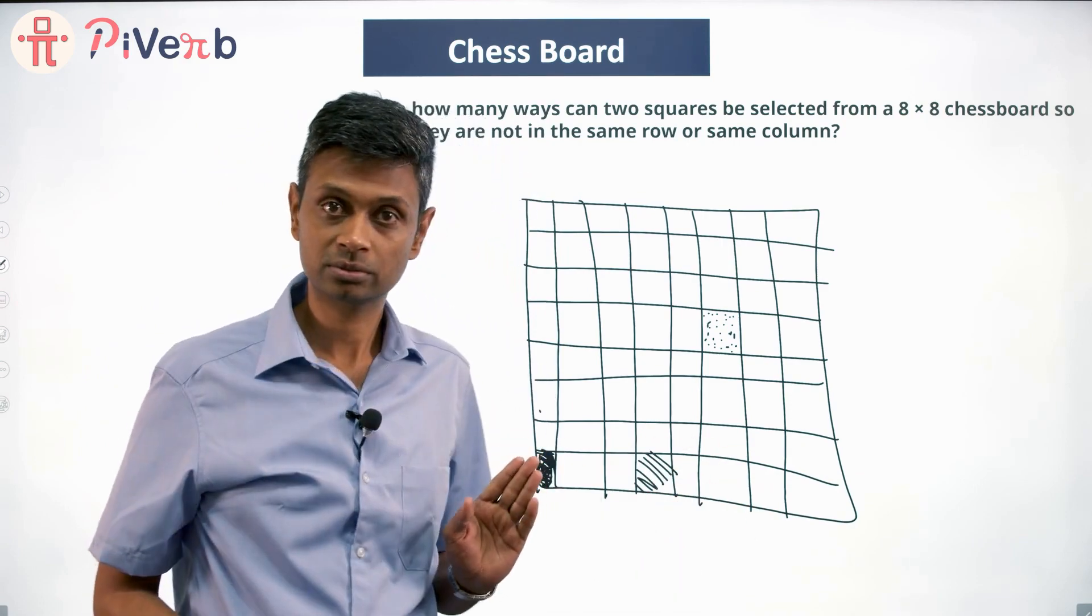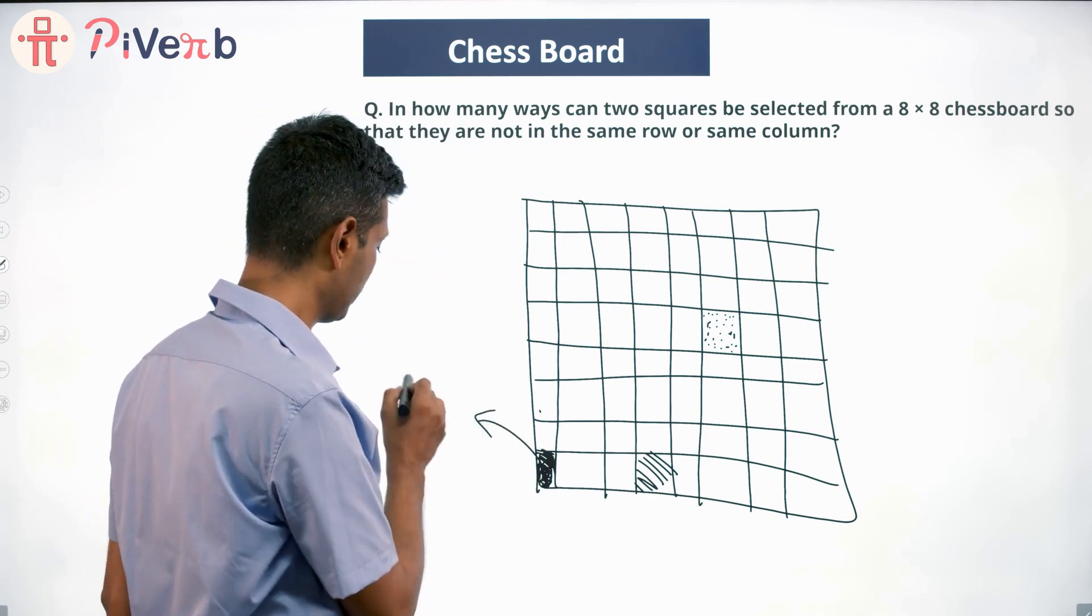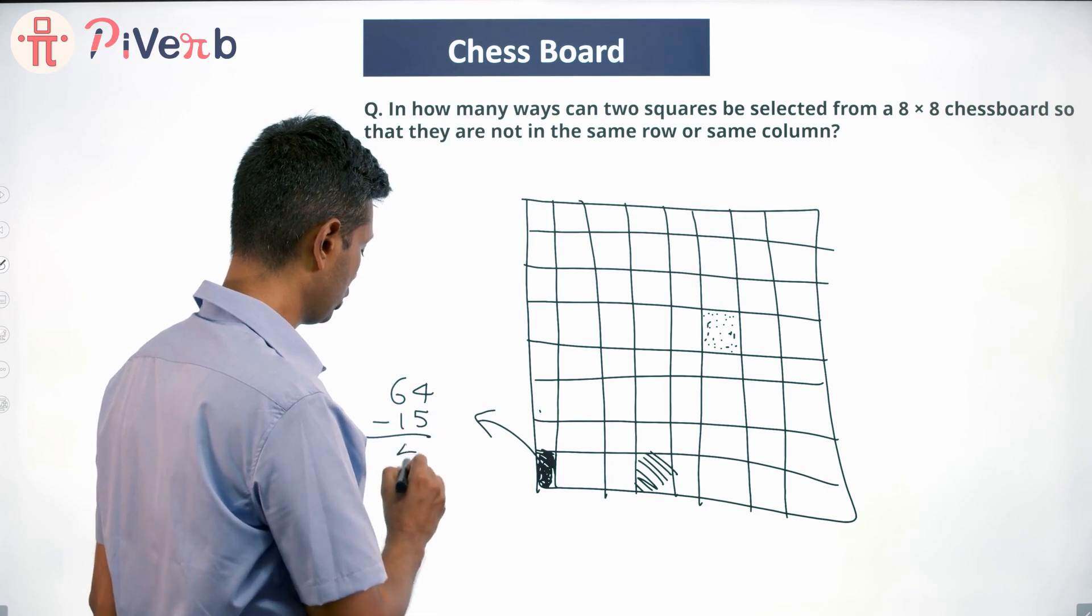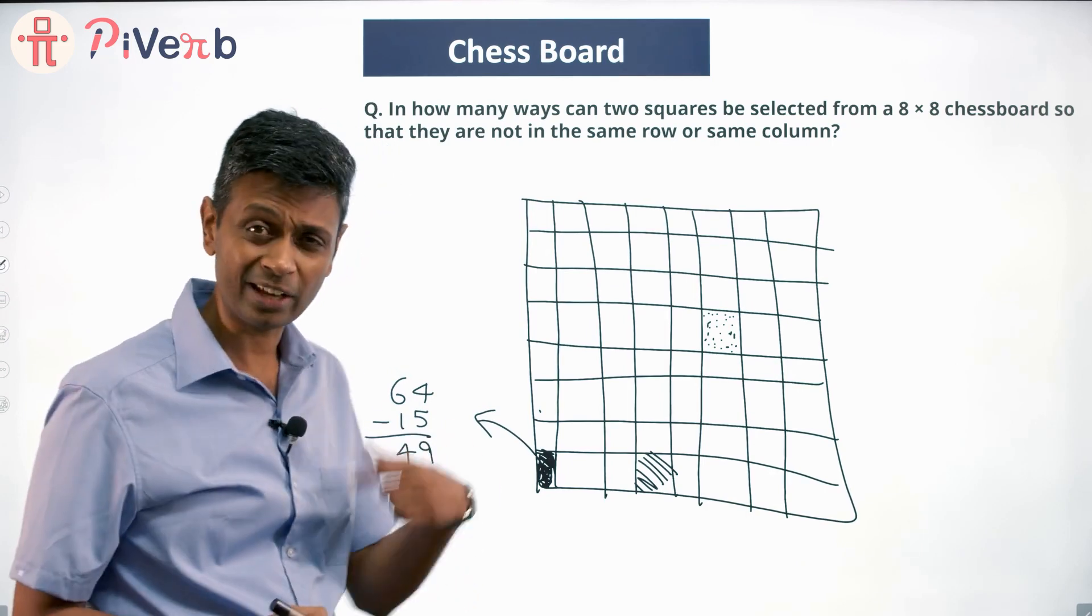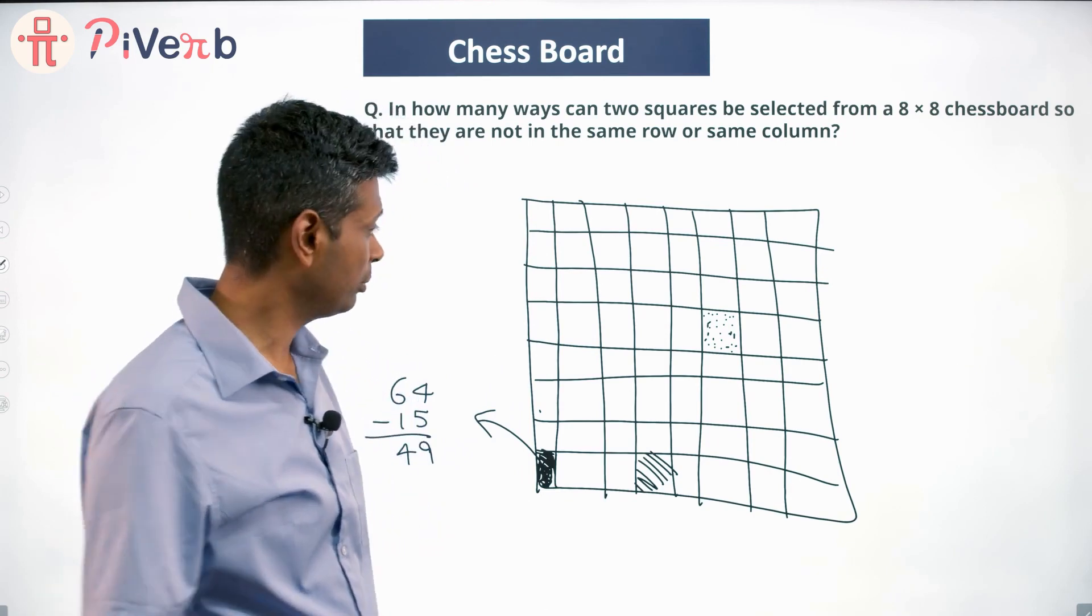Seven plus seven is fourteen to be eliminated. Already this one is eliminated, so fifteen are down. If this was the first square, we'll have 64 - 15 = 49 choices for the second square.